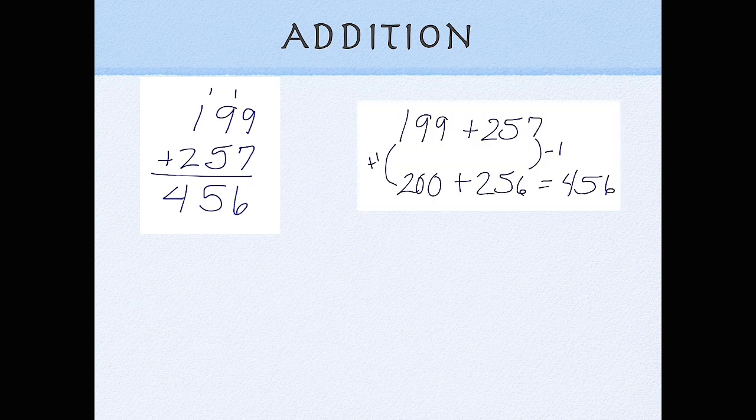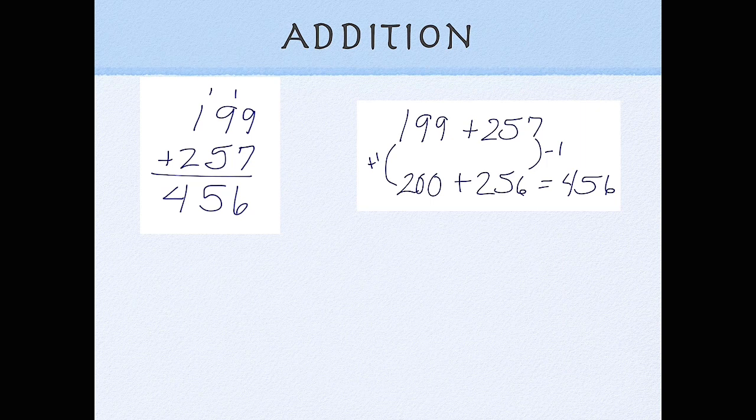So that on this problem, they can look at it and see that if they were to take one away from the 257 and move it over with the 199, that problem becomes much easier.